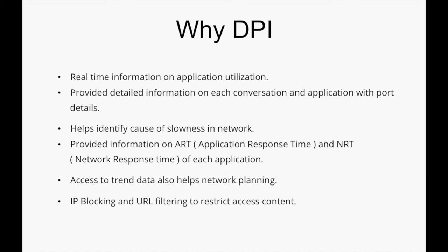We also provide information on application response time and network response time, which helps us find the slowness of an application based on user analysis. The trend data provided using real-time Deep Packet Inspection helps us plan our network architecture based on bandwidth utilization. IP blocking and URL filtering can also be done to restrict access to content using the DPI information.